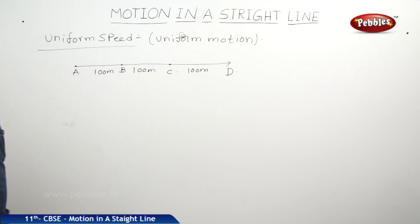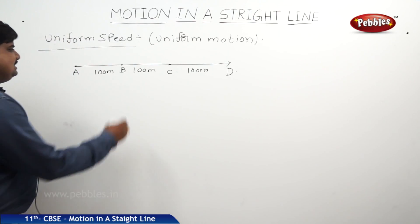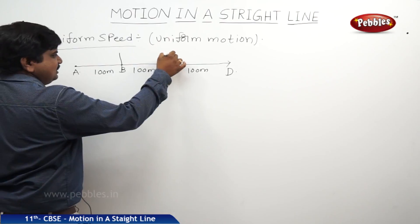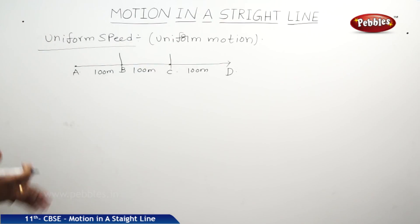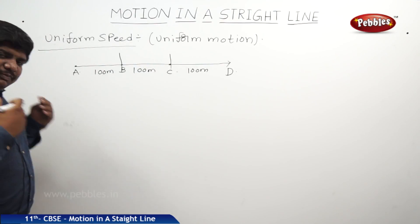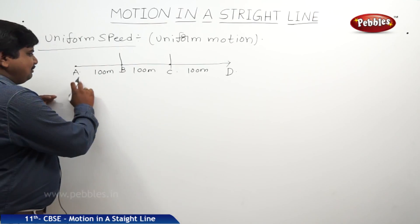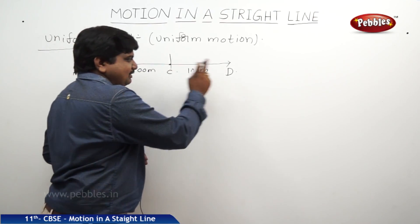Total distance is 300 meters. But if you see the interval range means, if you want to find out the speed of the body, how much speed the body has from A to B and B to C and as well as C to D.